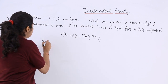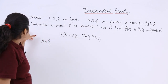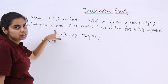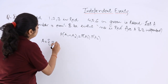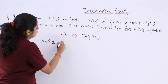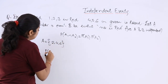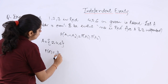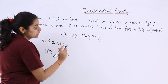Let's find the sample space of A. Event A is that the number is even, so the even numbers are 2, 4, and 6. The probability of A is 3 over 6, which equals 1 over 2.